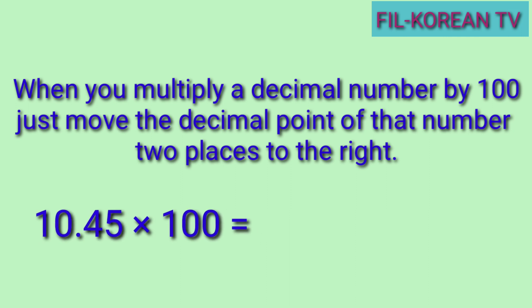Another example: ten and forty-five hundredths times one hundred. Okay, ang gagawin natin, i-move ang decimal point ng dalawang ulit pakanan — one, two. So, ang decimal point ay nasa hulihan ng five. At dahil wala namang number na susunod sa five, hindi na natin kailangan ilagay ang decimal point. Ang answer natin ay whole number. The answer is one thousand forty-five.